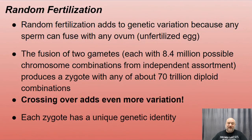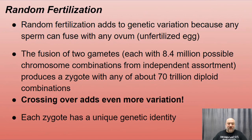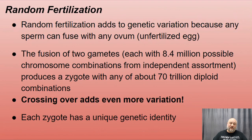Random fertilization adds further genetic variation because any sperm can fuse with any egg. The fusion of two gametes each with 8.4 million possible chromosome combinations from independent assortment alone produces a zygote with any of about 70 trillion diploid combinations — and that doesn't even account for crossing over. In other words, each zygote has a unique genetic identity, and the chances that any two siblings are genetically identical — unless they are identical twins, which is a different mechanism — are practically zero.